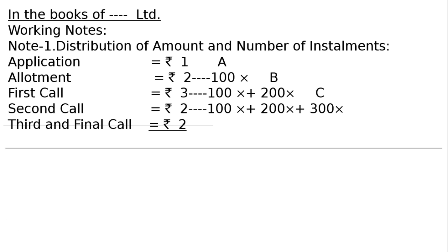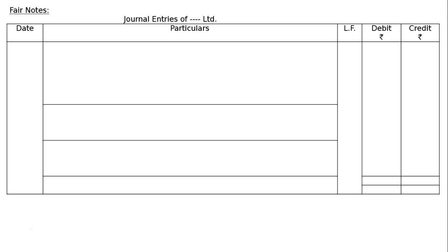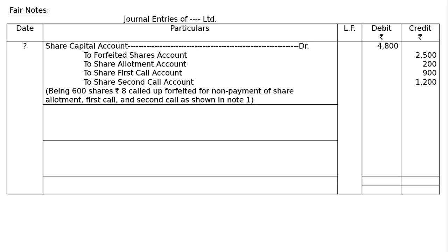The third and final call of Rs.2 has not yet been made. This means that out of Rs.10, we called Rs.8 — total called up is Rs.8. Now, journal entries of … Ltd.